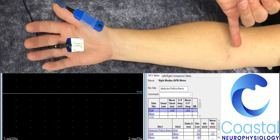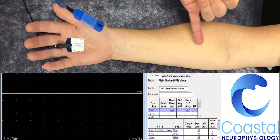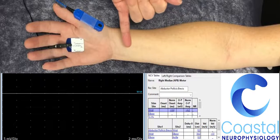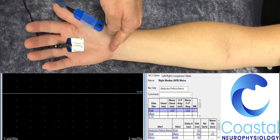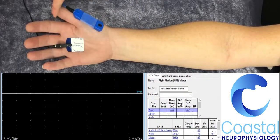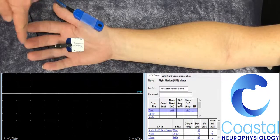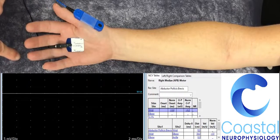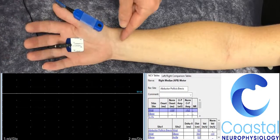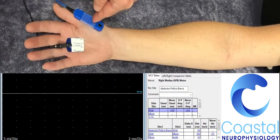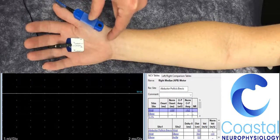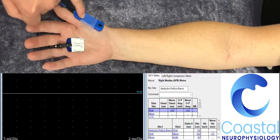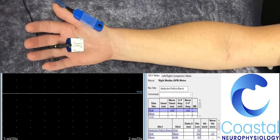The median nerve travels down the midline of the forearm here through the carpal tunnel at the wrist. The sensory part of the nerve extends to the thumb, index, middle and half of the fourth finger, while the motor component of the nerve branches back into what's called the thenar eminence, this group of muscles on the thumb.